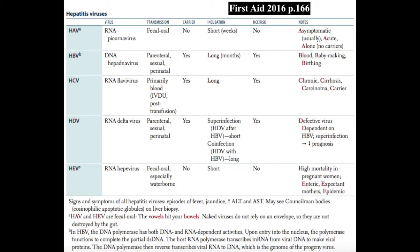Hepatitis C is the most commonly chronic hepatitis virus — it can cause cirrhosis and liver carcinoma, and it has a high carrier state. HDV or hepatitis D virus has a delta agent; it's actually a defective virus that requires the HB surface antigen to have an envelope. HDV is most associated with co-infection with HBV or a superinfection in patients that already have HBV — the latter carries the worst prognosis. HDV can also have a carrier state. For hepatitis D, remember: defective and dependent on HBV.